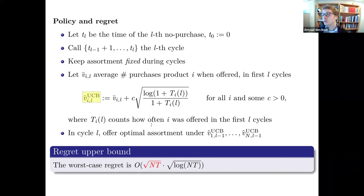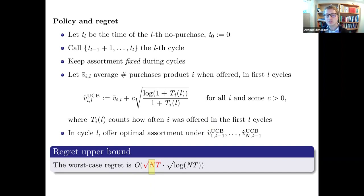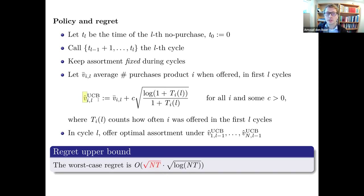As you offer product i more, the confidence radius shrinks — you gain knowledge. In each cycle, offer the optimal assortment assuming the upper confidence bound vector is the true valuation. Analyzing this policy gives a worst-case regret bound close to √(NT). In this capacitated case, we cannot remove the N dependence — the number of products appears, not k.